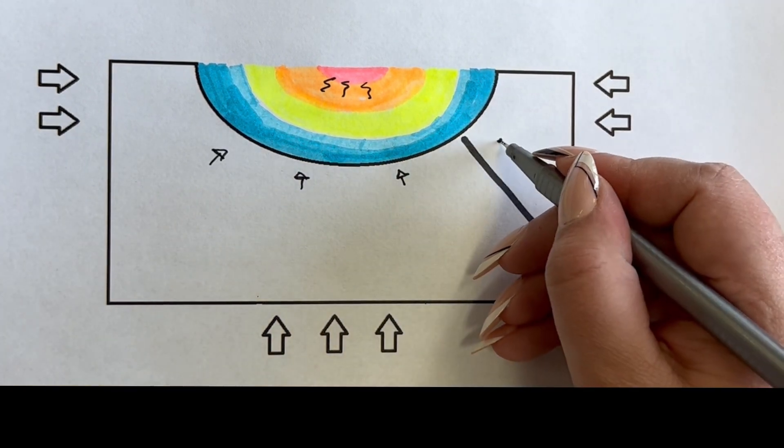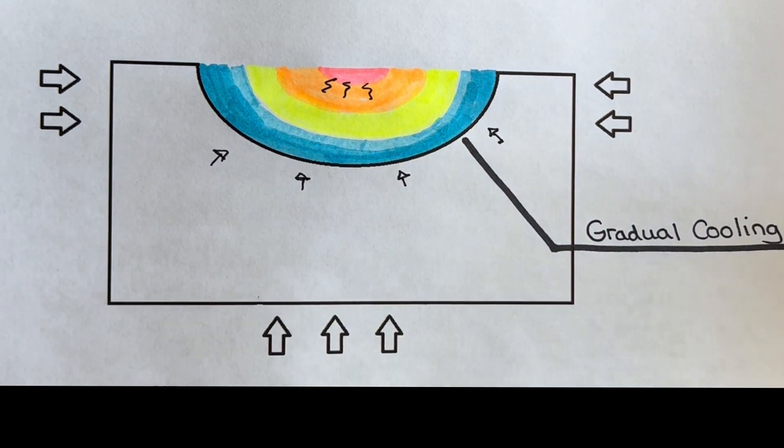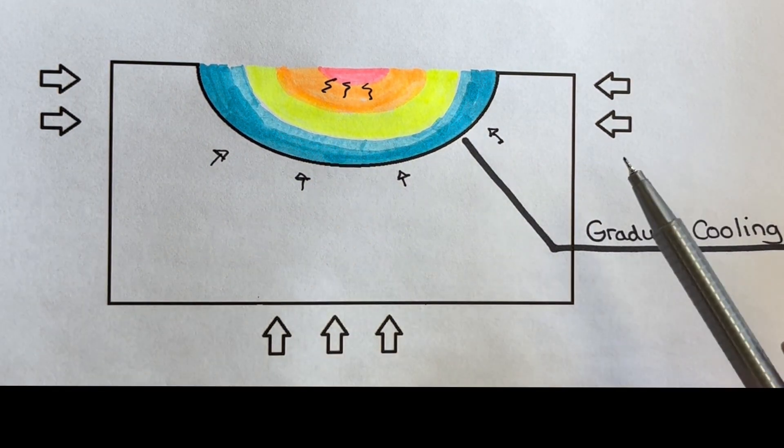In a constrained weld where neither piece can move, the shrinking weld pulls on each side and from end to end.